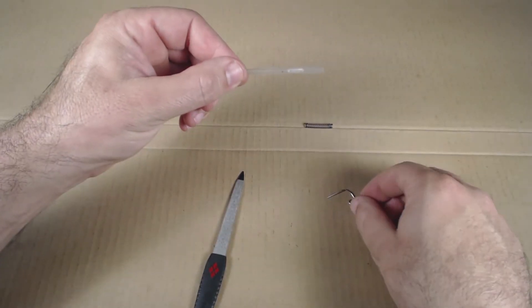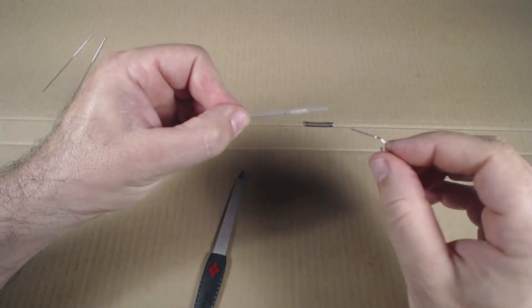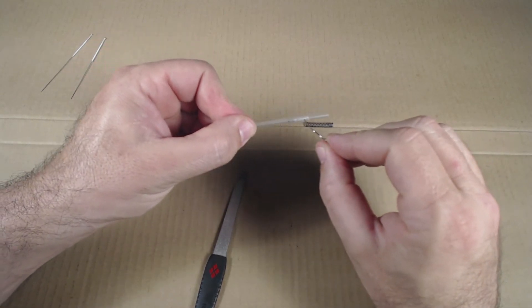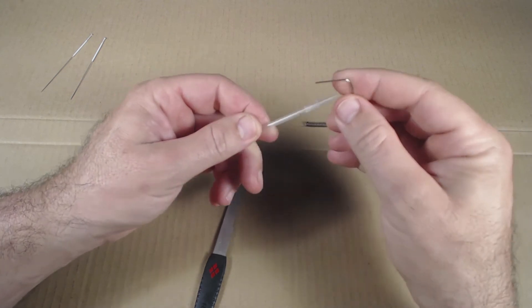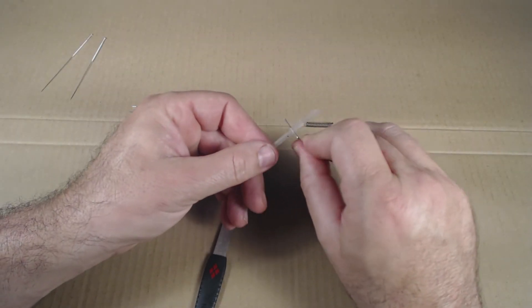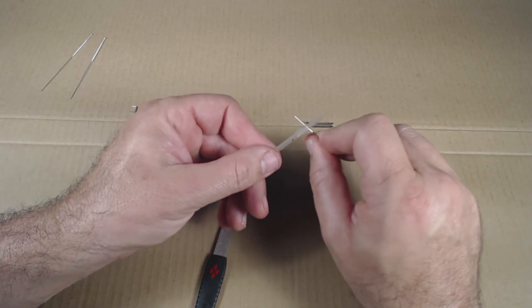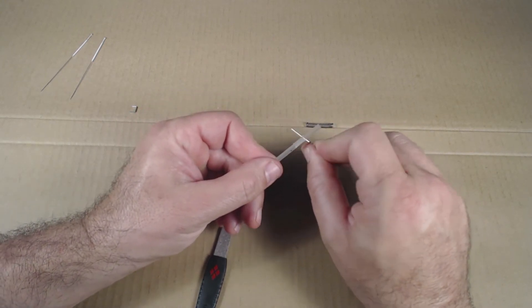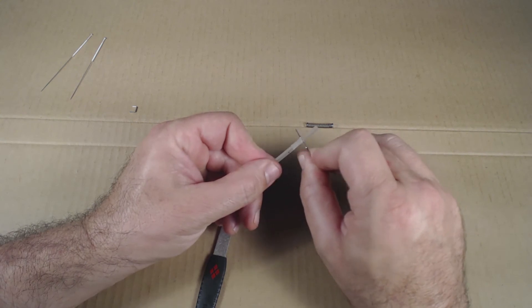So I've got the tube filed and I can test whether that slot's big enough by getting the paperclip in there. And does the paperclip move freely? I want it to move freely. That's my goal. And I'm about there on this one.